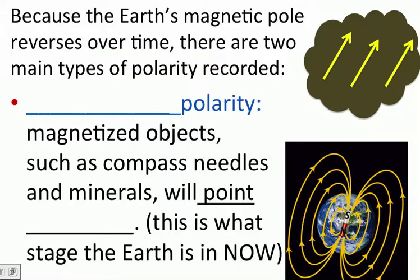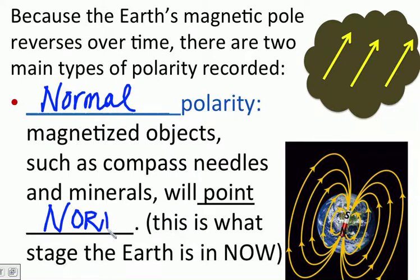Now, as mentioned, the Earth's magnetic field does flip-flop over time, so we have a name for each stage that the magnetic field can be in. We can have what we call normal polarity, and that normal polarity is when we notice the magnetic minerals and compass needles point towards the north, right? And we call that normal because that's what the Earth is now. Now, we humans have always experienced the magnetic field to point in that direction.